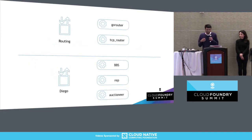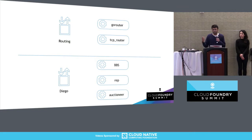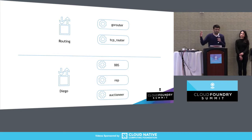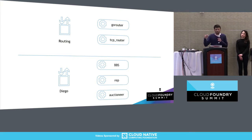A release is a self-contained representation of the software to be deployed and its lifecycle. Releases are normally produced and tested by developers — we call them release authors. Each release contains a collection of jobs; a job is a fundamental unit of deployment in BOSH that can be placed on a VM. For example, taking two random releases from the CF deployment — Routing and Diego — we can see jobs like GoRouter, TCPRouter, or IndiGo, BPS, and Rep. These jobs can be deployed independent of releases.